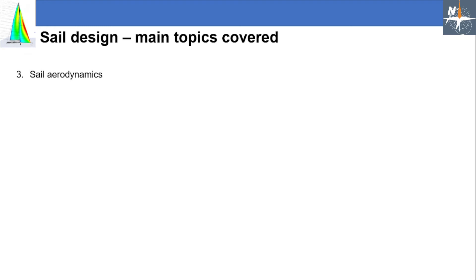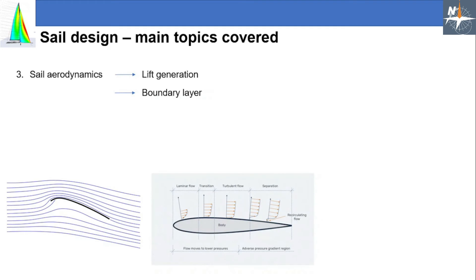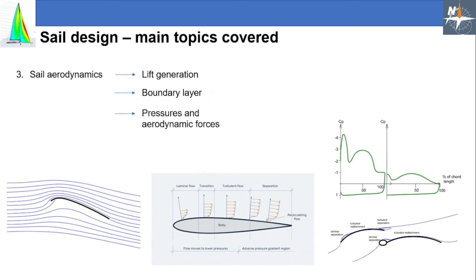The third topic was sail aerodynamics, where we got into the academic side of things. We talked about the generation of lift, which is the basis that makes sailing possible. Then we described the flow within the boundary layer, where things get interesting, and explored the pressures and aerodynamic forces on sails and the methods used to calculate them. There is a lot of interesting research on these topics — in my PhD thesis I focused simply on pressure and force determination through full-scale testing, and ended up writing about 250 pages with dozens of references, covering just a tiny portion of the complex field of sail aerodynamics.